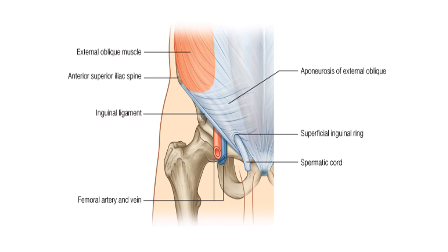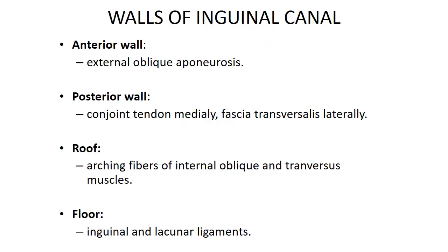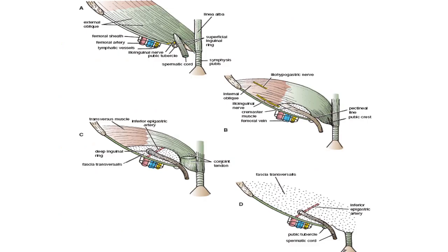Walls of the inguinal canal: Anterior wall — external oblique aponeurosis. Posterior wall — conjoined tendon medially, fascia transversalis laterally. Roof — arching fibers of internal oblique and transversus muscles. Floor — inguinal and lacunar ligaments.